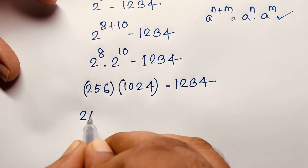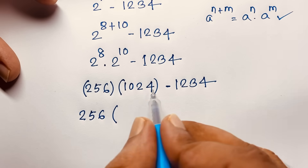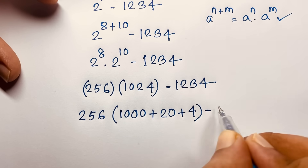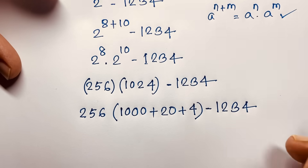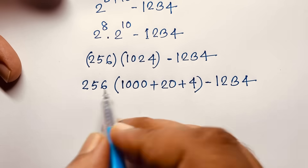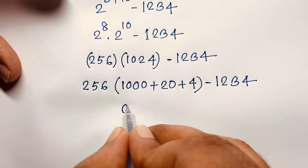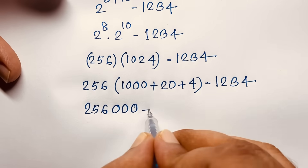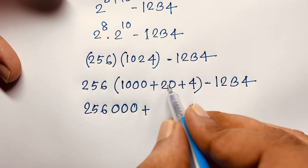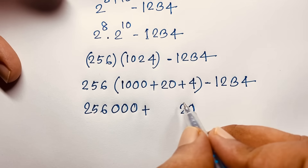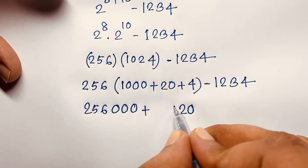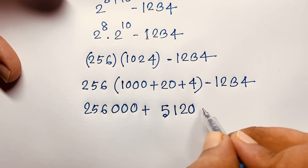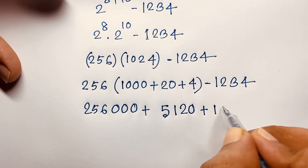So here is 1024 times 256. I compute step by step: 4 times 256 is 1024. Then 2 times 6 is 12, carry 1; 2 times 5 is 10, plus 1 is 11; 2 times 2 is 4, plus 1 is 5. So 4 times 256 equals 1024, and altogether 256 times 1024 equals 262144.